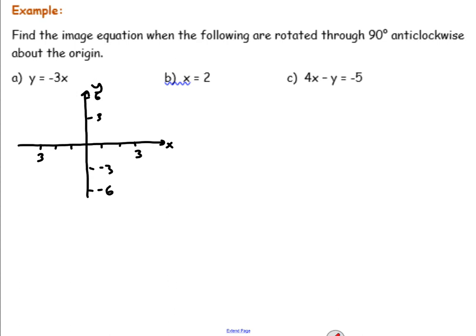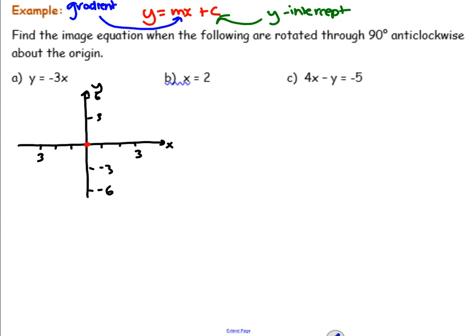We're going to draw it in red because it's the object. What's its y-intercept? That's right, its y-intercept will just be 0. The gradient is negative 3, so the rise must be negative 3 and the run is 1. Negative 3 as a fraction is negative 3 over 1. So from the y-intercept, we go down 3 across 1.